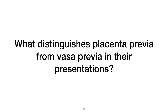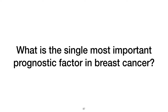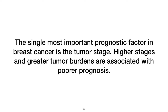What distinguishes placenta previa from vasa previa in their presentations? Both conditions may present similarly, but with vasa previa there is rapid deterioration of fetal heart rate tracing due to fetal-origin hemorrhage, which is not typically seen in placenta previa. What is the single most important prognostic factor in breast cancer? The single most important prognostic factor is the tumor stage — higher stages and greater tumor burdens are associated with poorer prognosis.